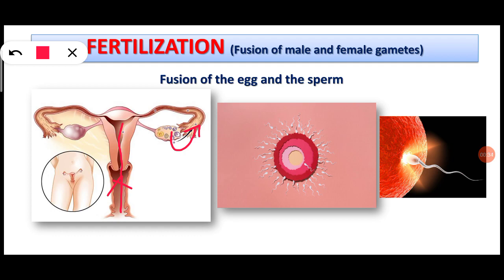The sperms continue their journey through the uterus into the oviduct, and finally they reach the egg and fuse with it to complete the process of fertilization.